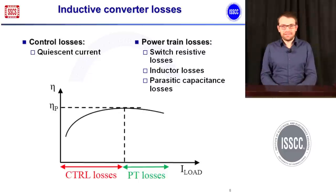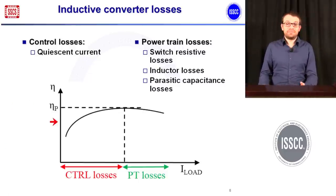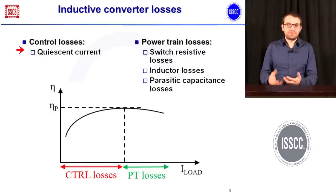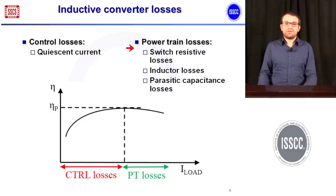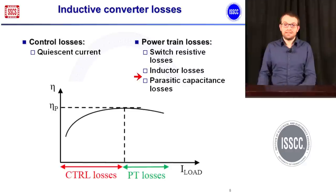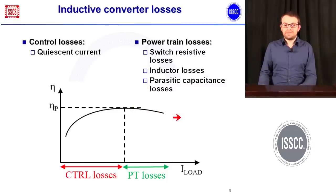Of course, when you implement this practically with real components, the peak efficiency will not be 100% — it will be something like 90–95%. You will have a characteristic that drops down for very low load currents because the control circuit losses and quiescent current start to dominate. You will also have power train losses: the switches have a finite resistance, the inductor is not ideal, and there are parasitic capacitances on the switching nodes, so the efficiency characteristic will have a peak somewhere.